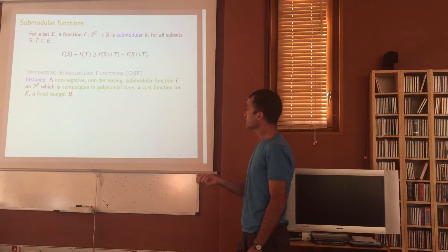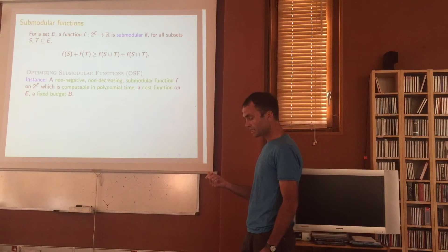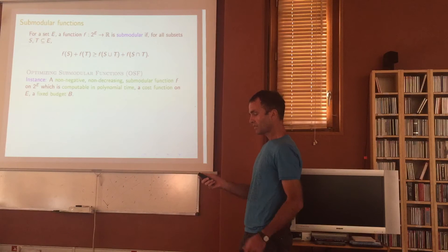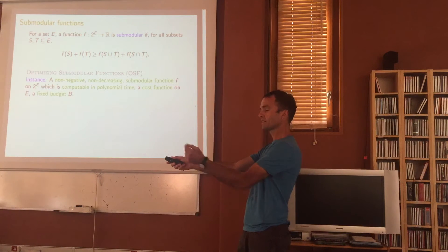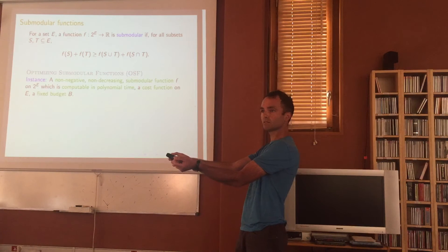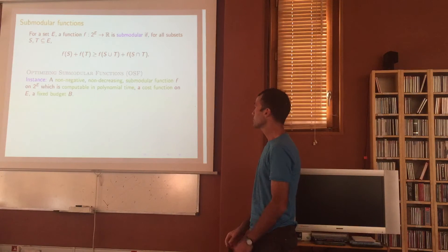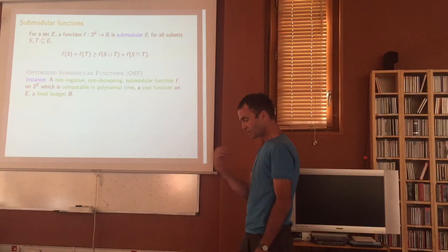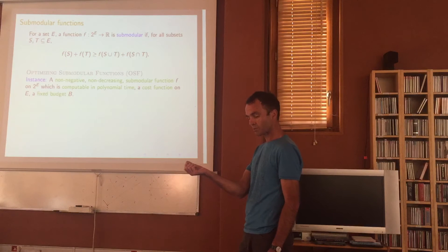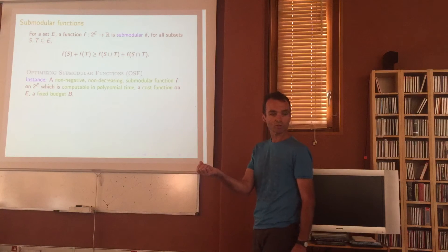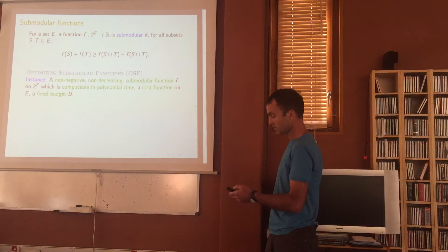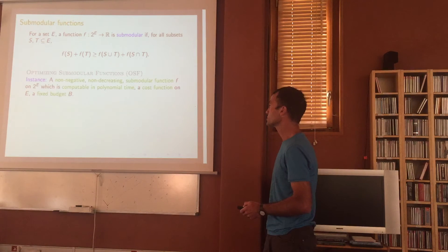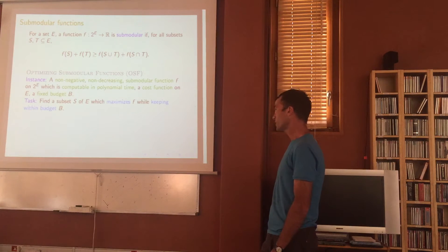Specifically: F has to be non-negative, non-decreasing (if I've got a set and a subset, the function value on the bigger set is at least as large as on the subset), and submodular. It must be computable in polynomial time, since we want polynomial-time approximation algorithms. We also have a cost function (the cost of reserves), and given these conditions, we can find a subset.